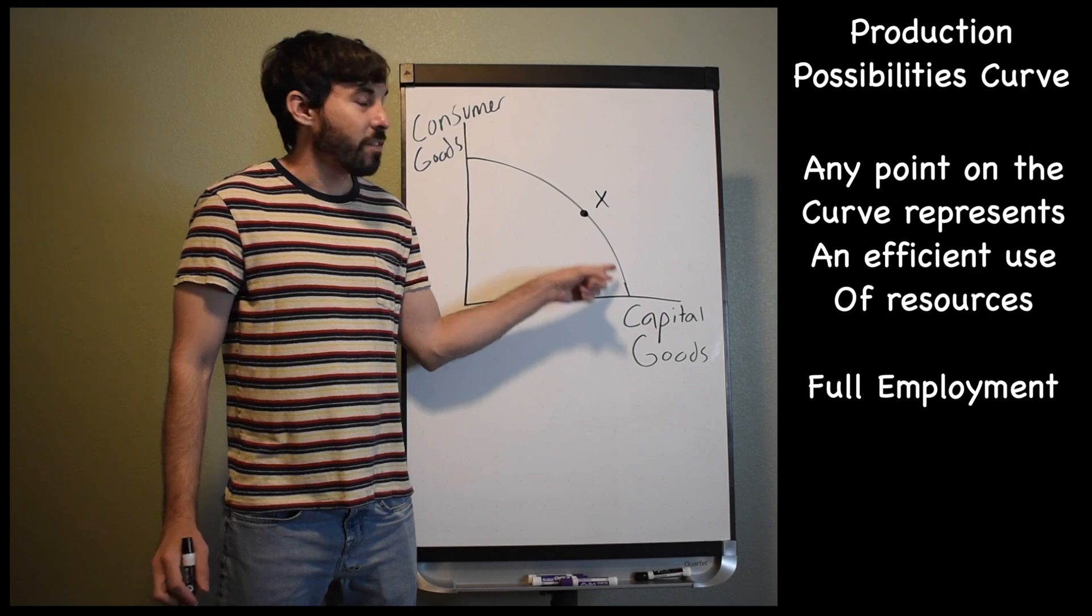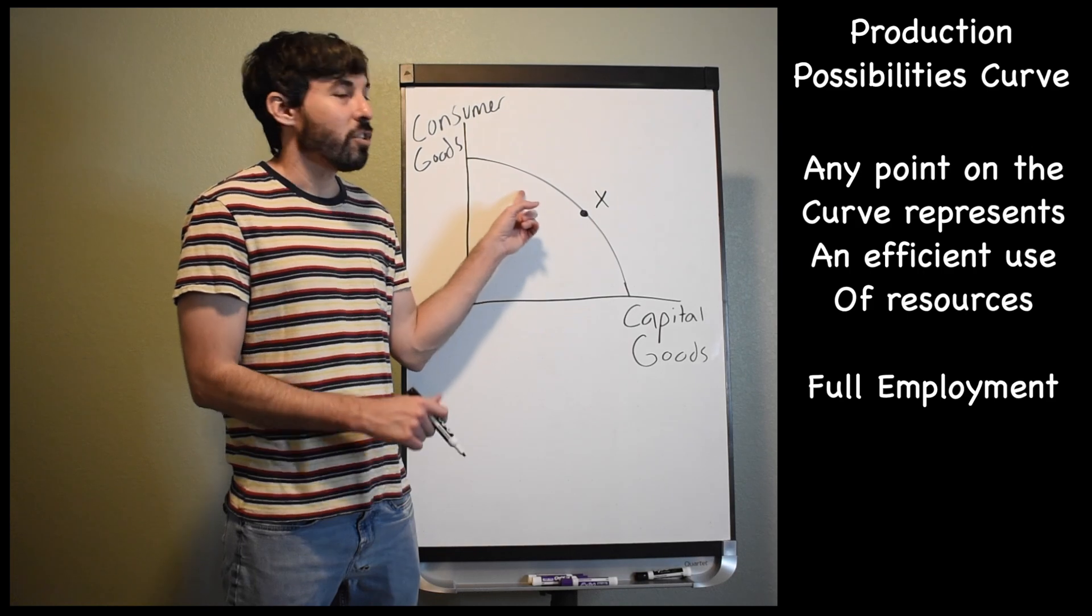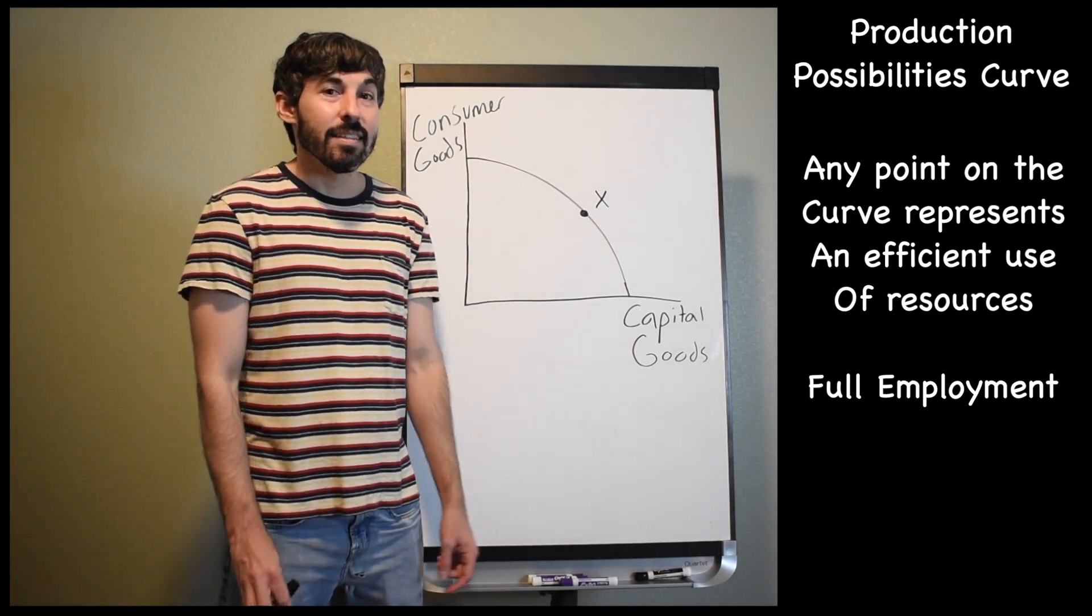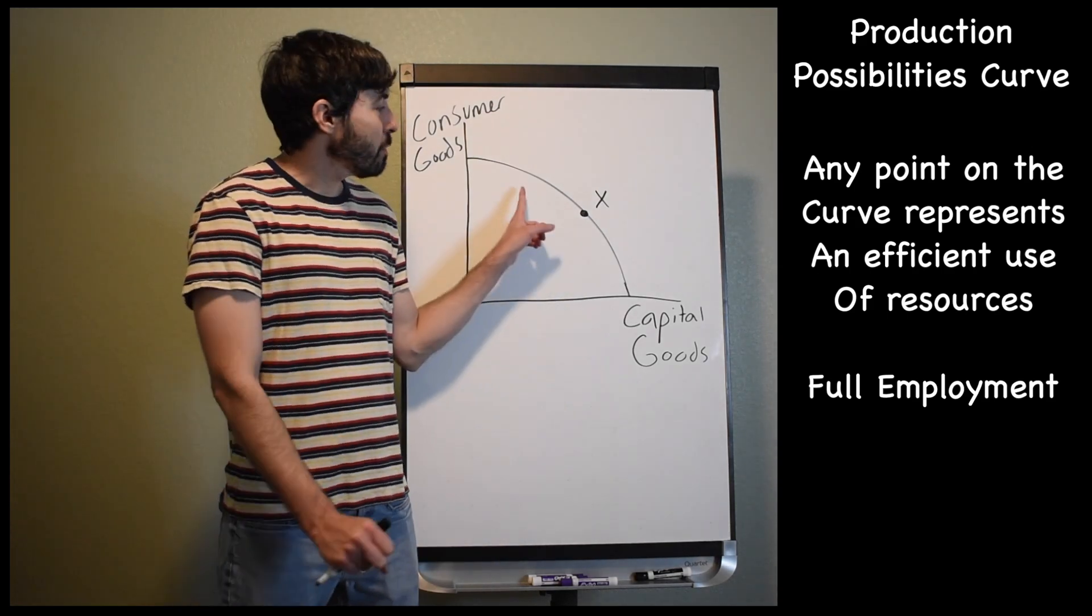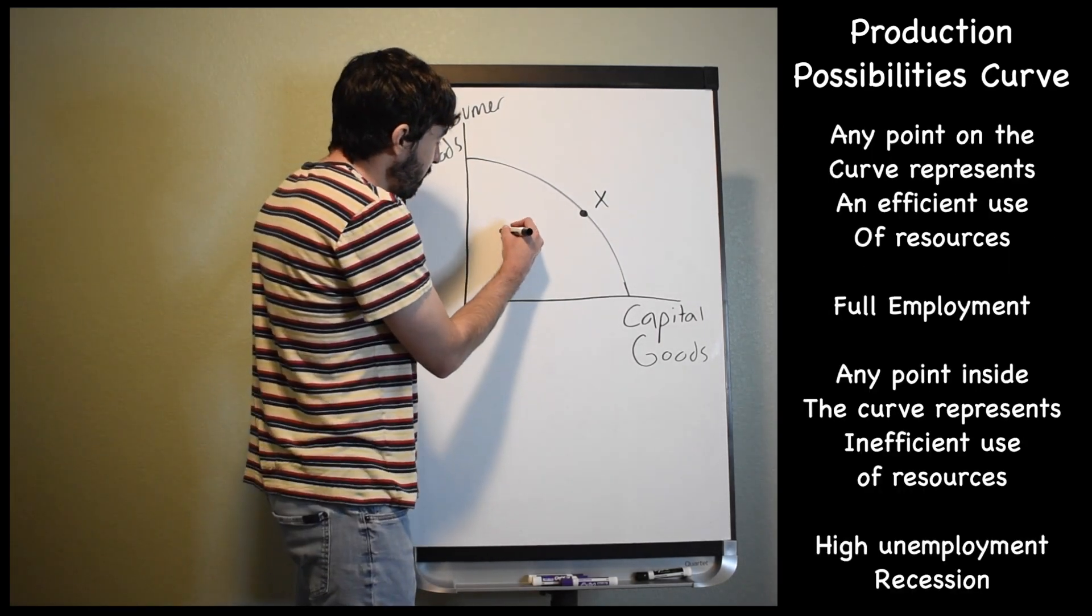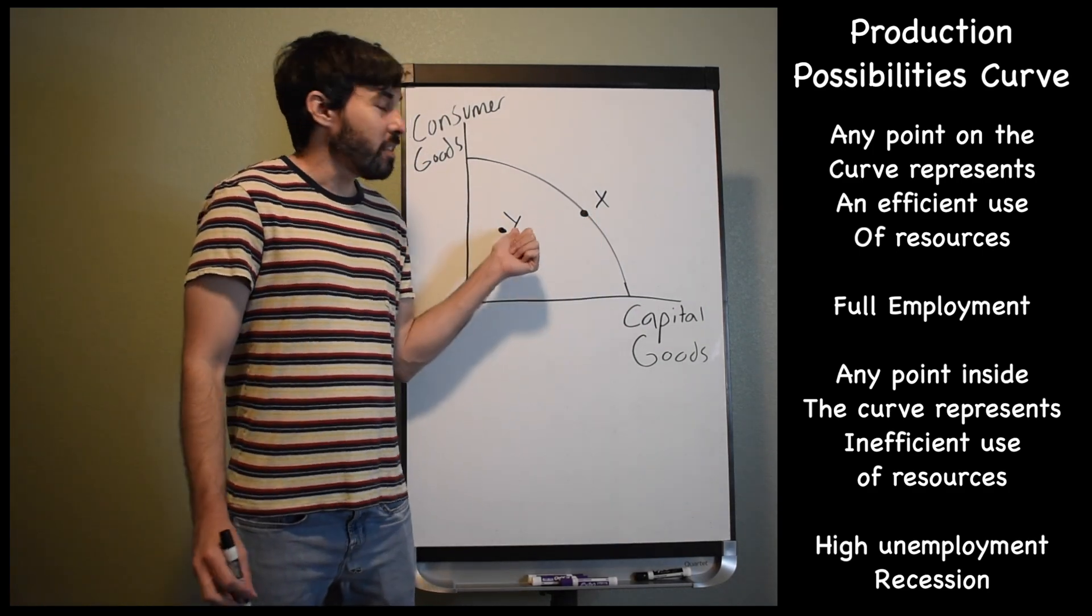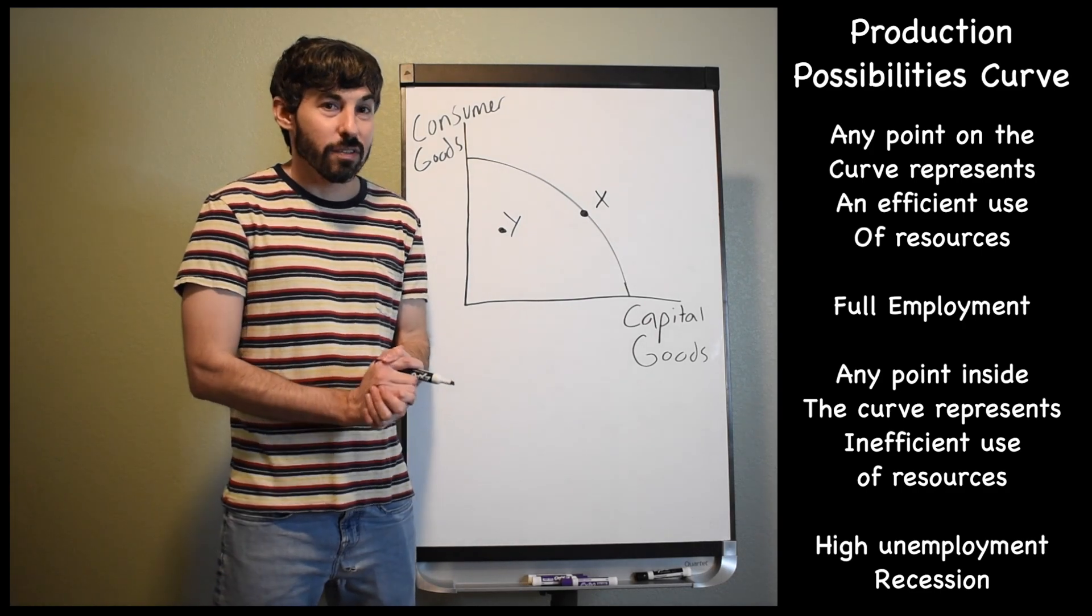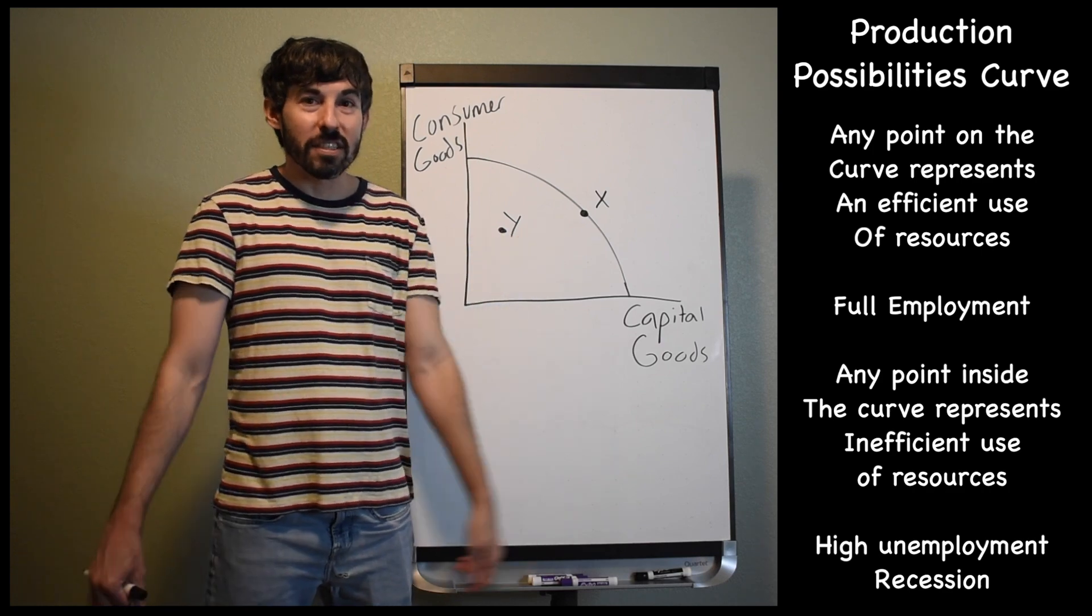Now, anywhere on this curve is going to be an efficient use of resources. As long as your point is touching this curve, you're using all of your resources efficiently and not wasting anything. The main thing we're going to be thinking about wasting is labor hours, so we're experiencing full employment if we are touching that curve. Any dot inside the curve is going to represent a recession. If the dot is inside the curve, there is an inefficient use of resources. You're wasting your resources, again, namely labor.